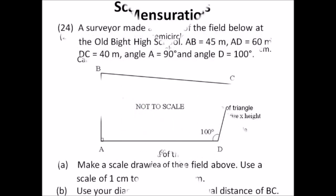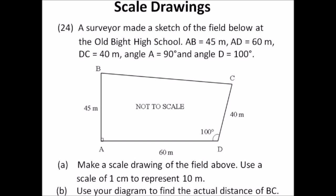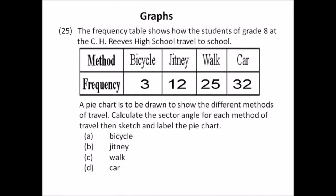Number twenty-four: scale drawing. A surveyor sketches a field where AB is 45 meters, AD is 60 meters, DC is 40 meters, angle A is 90 degrees, and angle D is 100 degrees. Make a scale drawing using a scale of 1 centimeter to represent 10 meters. Use your protractor — draw a 90-degree angle, then lines of 4.5 cm and 6 cm. At D, draw a 100-degree angle and go up 4 cm. Measure BC with your ruler to find the actual distance.